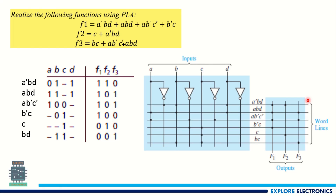Let me take one more example where F1, F2, F3 are the functions. The product terms here are A bar · BD, ABD, A · B bar · C bar, B bar · C, and CBD. For A bar · BD, B equals 1 and D equals 1, with no C, and A is 0. A bar · BD is available in functions F1 and F2, but not F3, so I write 1, 1, 0. Similarly ABD gives 1, 1, dash, 1 — it is present in F1 and F3. In the same way, you write all F1, F2, F3 values.